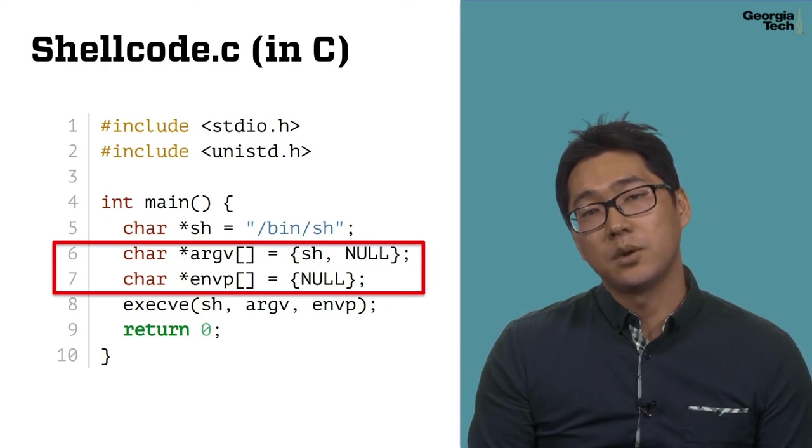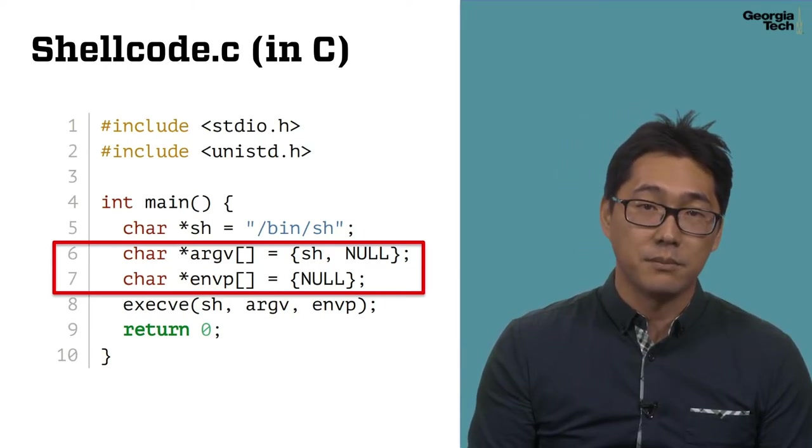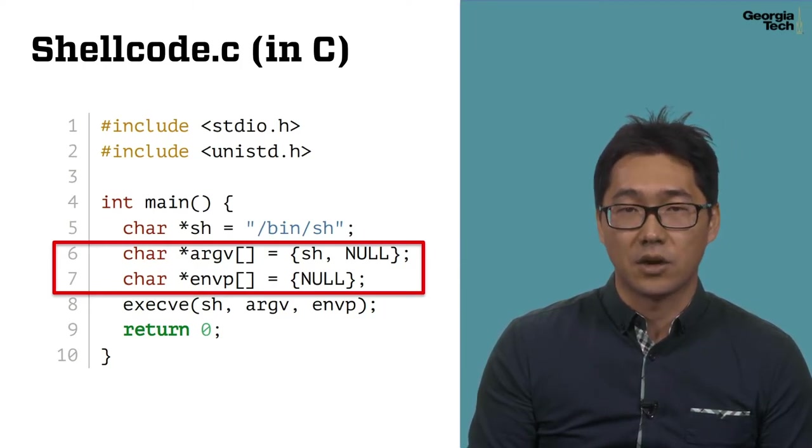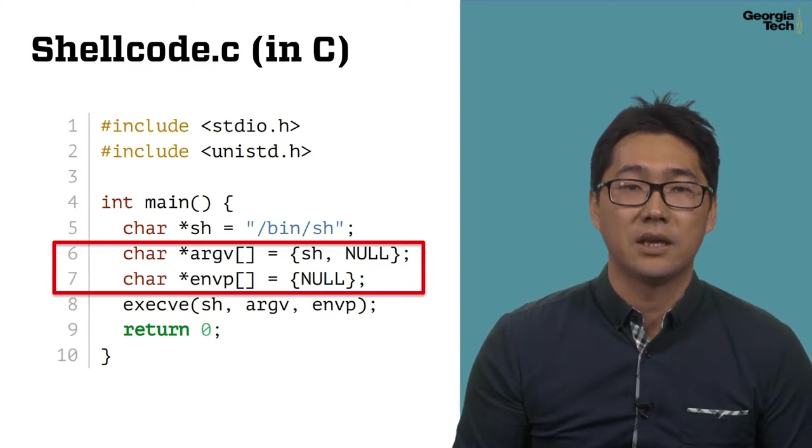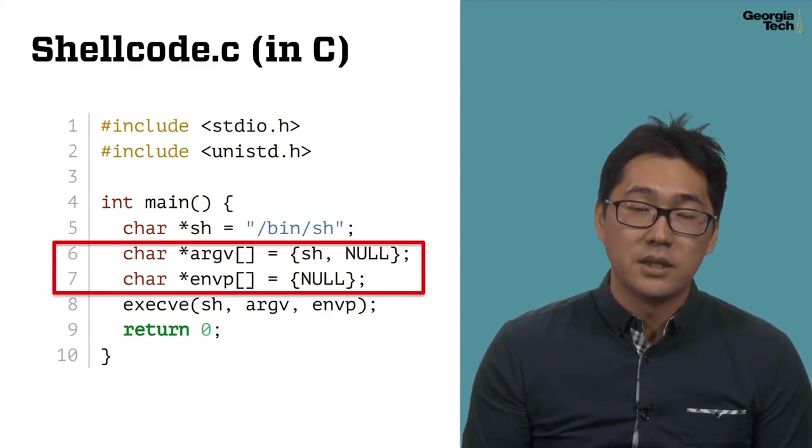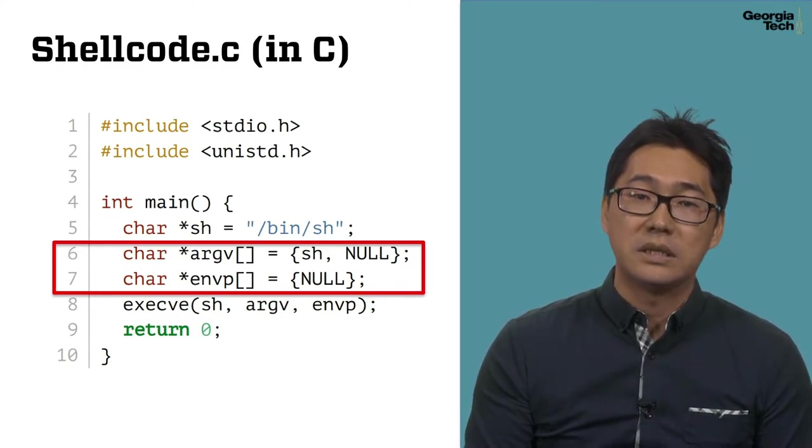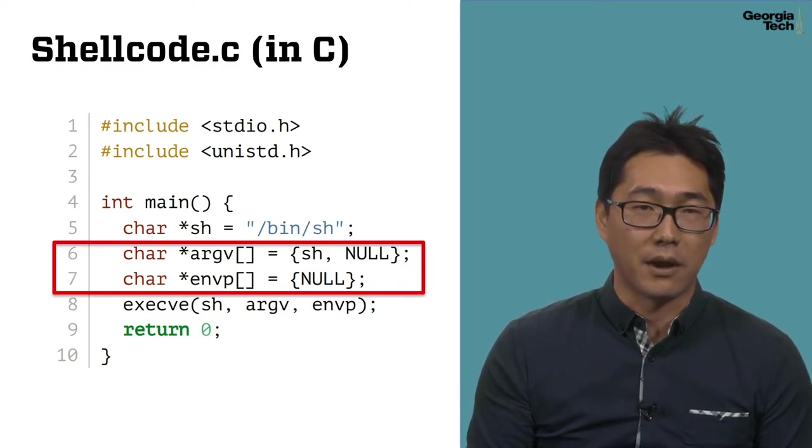There are a few things to notice here. Other than the program name, there are two additional arguments to execute execv: argv to indicate the argument, and envp to indicate the environment variable. The type of both variables is array, which end with null to indicate the last element of the array.